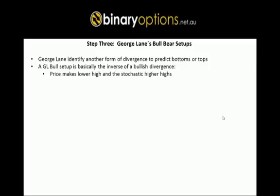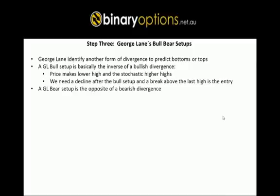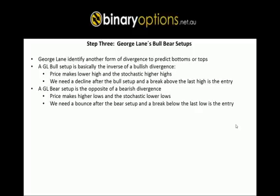A George Lane bull setup: price makes lower highs and the stochastic makes higher highs. We need a decline after the bull setup and a break above the last high for an entry. A George Lane bear setup is the opposite of a bearish divergence: price makes higher lows and the stochastic makes lower lows. We need a bounce to the upside after the bear setup and a break below the last low to get an entry and a signal to buy puts.